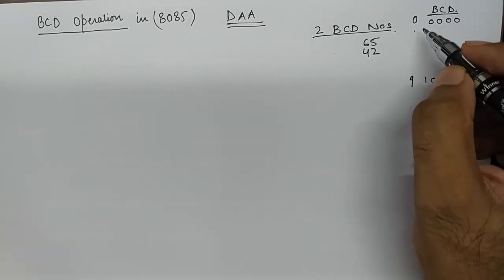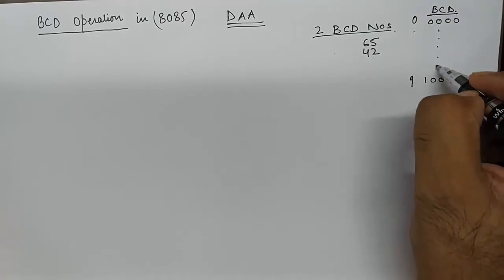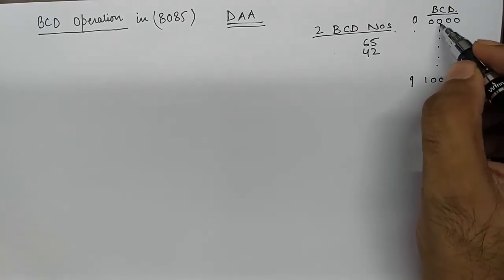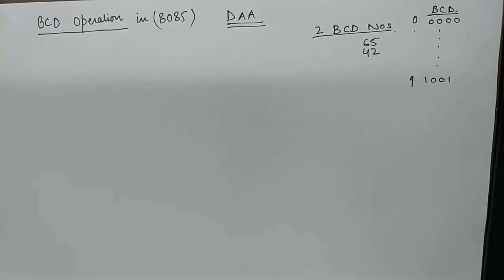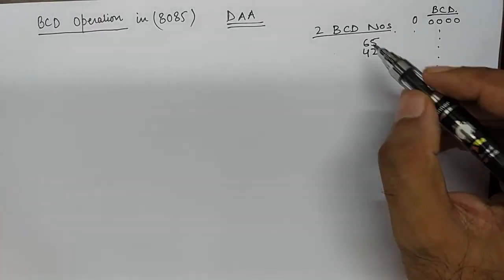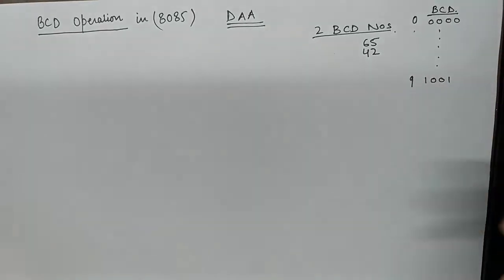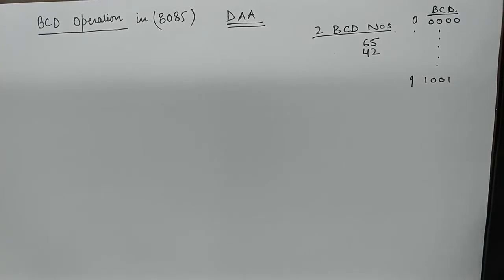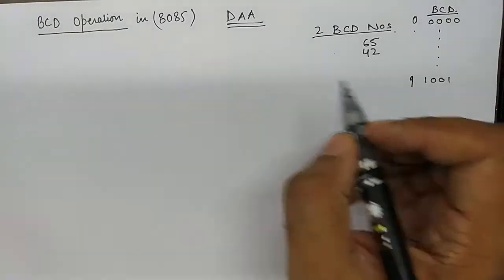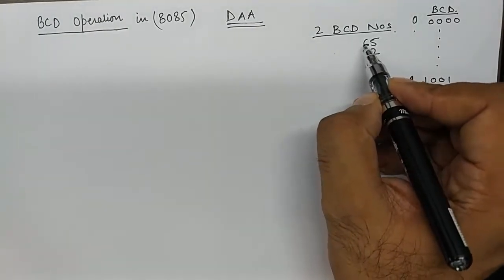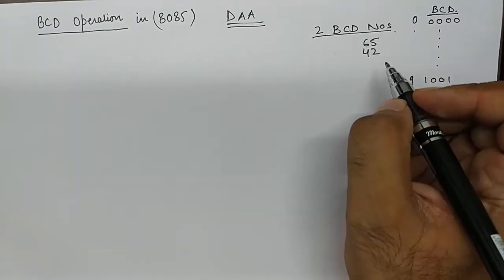So all the decimal numbers from 0 to 9 are represented by a code which is 4 bit in length. It makes perfect sense to put two BCD numbers into registers of microprocessors, because the microprocessor registers are 8 bit or 16 bit. We can put a BCD number which either has 2 digits or 4 digits. In case of 8085, we have this example where I have taken two valid BCD numbers 65 and 42.